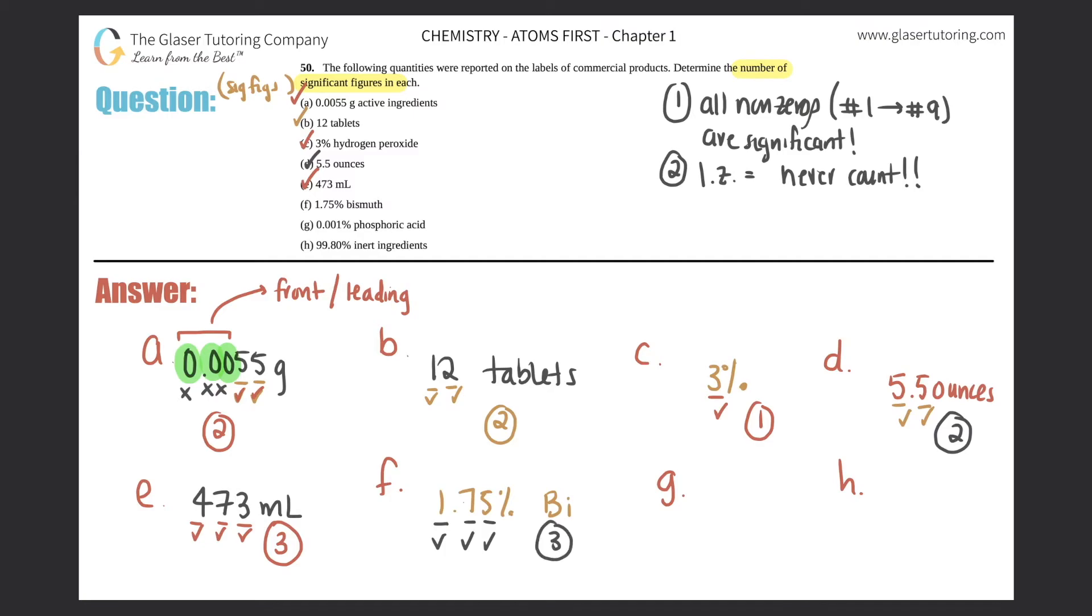F: 1.75% bismuth. We have one, seven, and five. They're all non-zero so they all check out. Three sig figs. G: 0.001% phosphoric acid. We have a one here, so this checks out, but what's going on with these zeros in the beginning? They're front zeros, these are leading zeros, and leading zeros never count. So there's literally only one sig fig for this one.